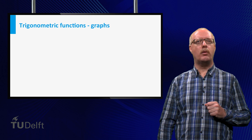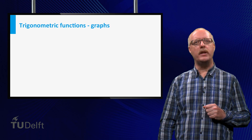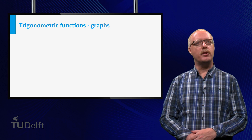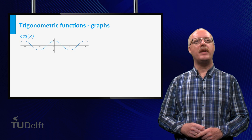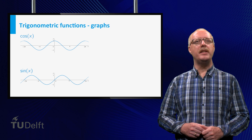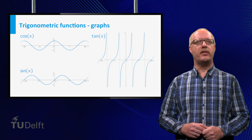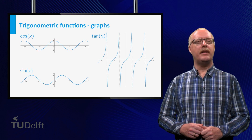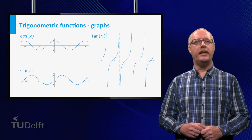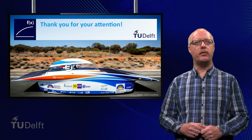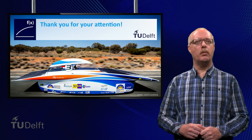Finally, we look at the graphs of the trigonometric functions. Both the cosine and the sine are defined for all real values of the angle, which is the argument of the function. The graph of the cosine looks like this, and the graph of the sine like this. Since the tangent is the ratio of the sine and the cosine, it is well defined for all values of x for which the cosine is not equal to zero. At the zeroes of the cosine the graph has vertical asymptotes. In the next video we will cover the main properties of these trigonometric functions, as well as their rules of calculation. Good luck with the exercises!